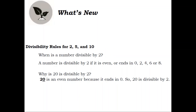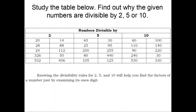Let's go to What's New. Divisibility rules for 2, 5, and 10. When is a number divisible by 2? A number is divisible by 2 if it is even, or ends in 0, 2, 4, 6, or 8. Why is 20 divisible by 2? 20 is an even number because it ends in 0. So 20 is divisible by 2. Study the table below. Find out why the given numbers are divisible by 2, 5, or 10.